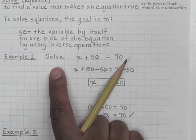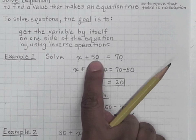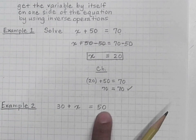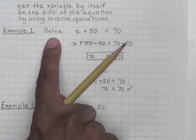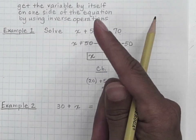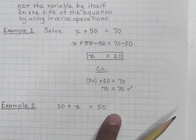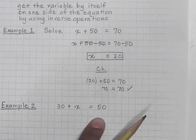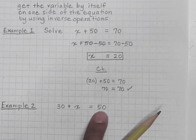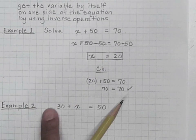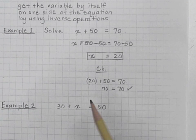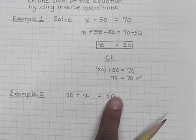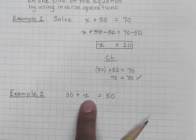That was our first example — very detailed in the direction given. But most of the time you're going to see just an equation without the word "solve." What you're being asked is still to solve the equation — to find a value that makes it true. In this case, we ask ourselves: which side is the variable on? We see it on the left.